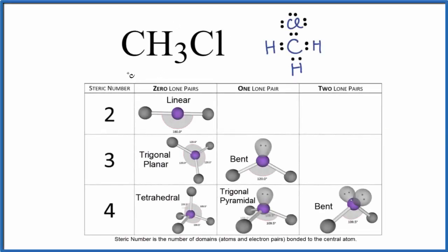Let's look at the molecular geometry for CH3Cl. This is chloromethane, also called methyl chloride. So to start out with, we want to look at the Lewis structure here for CH3Cl.